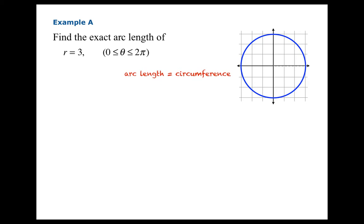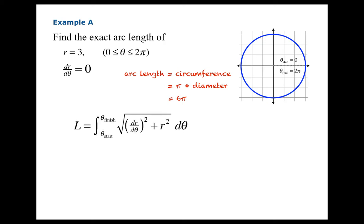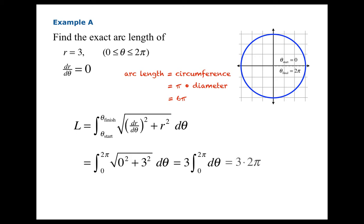We know that the arc length in this case is simply the circumference, which is π times the diameter, so the answer should be 6π — we know that before we even calculate. What does our formula tell us? We need dR/dθ, which in this case is just 0. Theta runs from 0 to 2π to get the whole circle. The integral becomes the square root of 0 squared plus 3 squared, which is just 3 times the integral dθ from 0 to 2π. That gives 6π, which agrees with what we already knew.